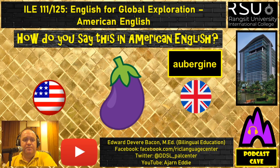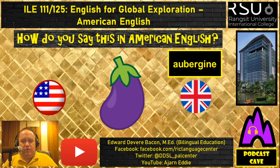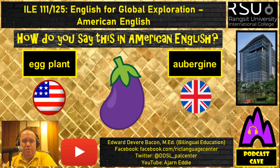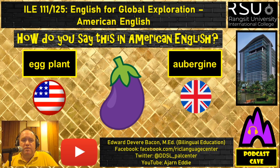Now we're switching — given a British English word, what would an American say? 'Aubergine' is British English; Americans say 'eggplant.' I actually didn't learn this word until I moved to Japan, and I ate eggplant for the first time there. It was a little strange because it's a purple vegetable, and for me purple is kind of the color of candy.